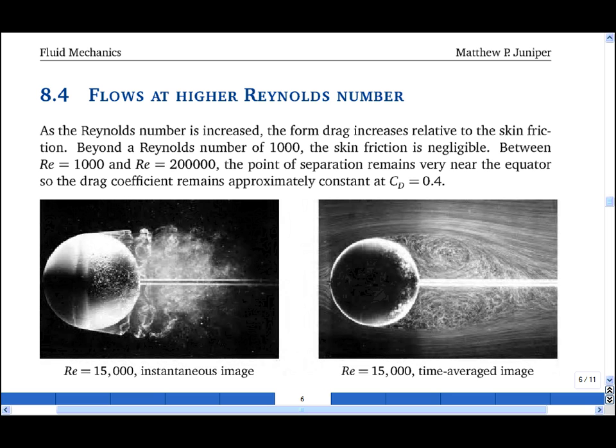As the Reynolds number increases, the form drag increases relative to the skin friction. Beyond a Reynolds number of around 1,000, the skin friction is negligible. Between a Reynolds number of 1,000 and 200,000, the point of separation remains very close to the equator. We can see this on the instantaneous image on the left at a Reynolds number of 15,000, but perhaps it's more clear in the time averaged image on the right, where here we can see the separation point here and the recirculation zone behind the sphere.